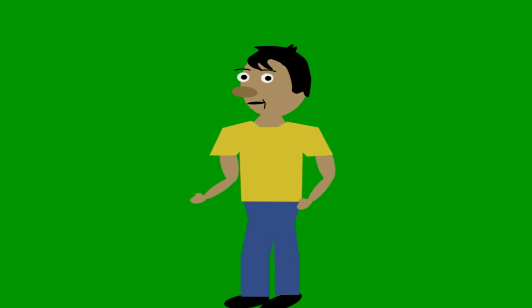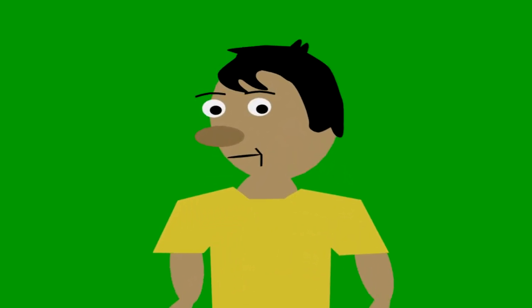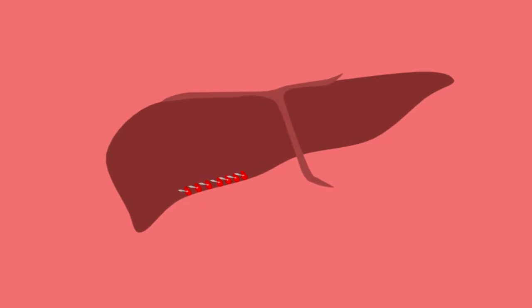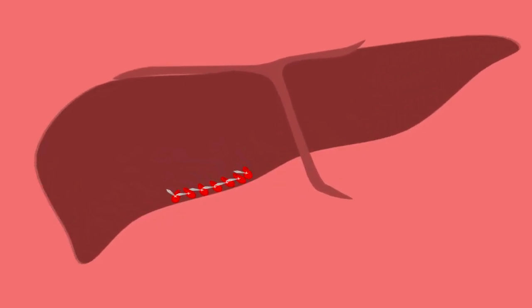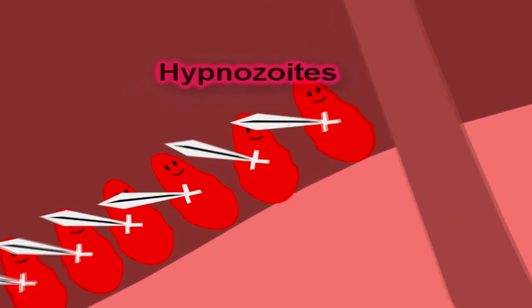With Plasmodium vivax infection, patients may suffer relapses months or years after having no symptoms. These relapses are triggered by reactivation of dormant parasites in the liver called hypnozoids, which invade red blood cells.